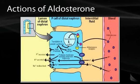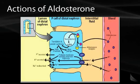To reiterate the actions of aldosterone: aldosterone is synthesized in the zona glomerulosa, secreted into the bloodstream, and makes its way to the distal convoluted tubule in the kidney, where it binds the mineralocorticoid receptor. This triggers transcription and translation, and one of the main proteins produced is the sodium-potassium ATPase, which allows for sodium absorption and potassium secretion.